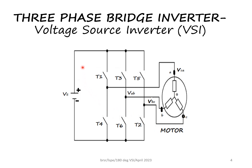Some basic things to understand before studying this circuit: there are six switches T1 to T6. The numbering is T1, T3, T5 for the upper group and T4, T6, T2 for the lower group. In 180-degree mode of operation, each device conducts for 180 degrees. That means if T1 conducts for 180 degrees, the next 180 degrees T4 will conduct. Then T3 conducts for 180 degrees, followed by T6. Similarly for T5 and T2.